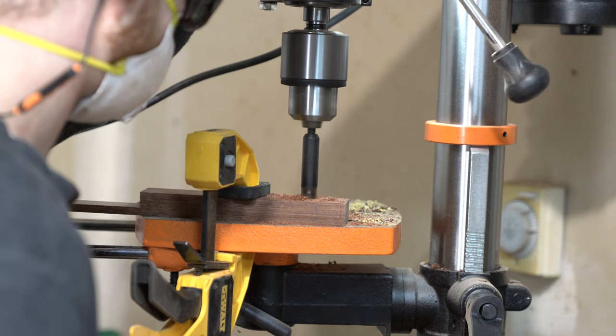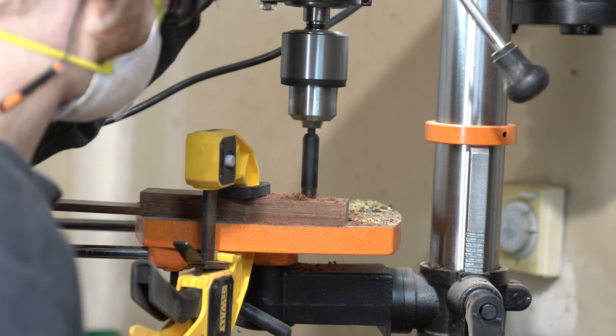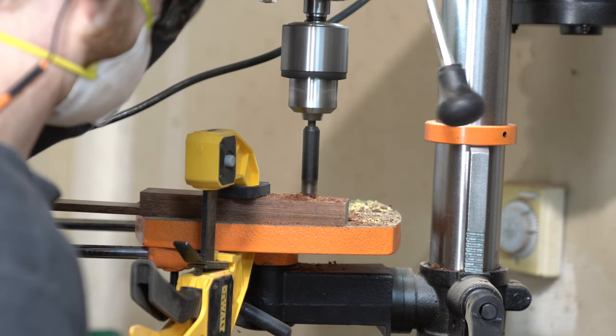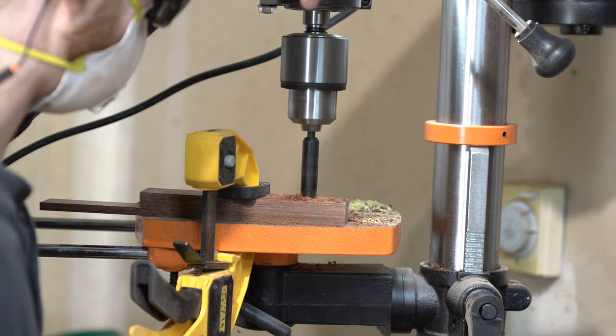I thought of this plan where I could use a plug cutter and not quite go far enough that it actually pulled the plug out, but would kind of leave it sticking up, almost like a dowel embedded in the wood. So I tried that with some scrap, and it worked perfectly.